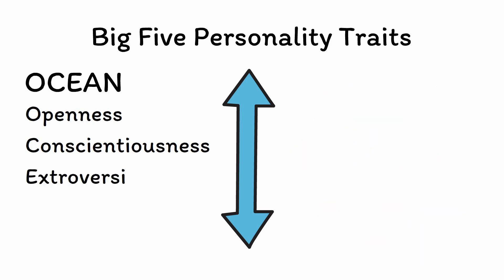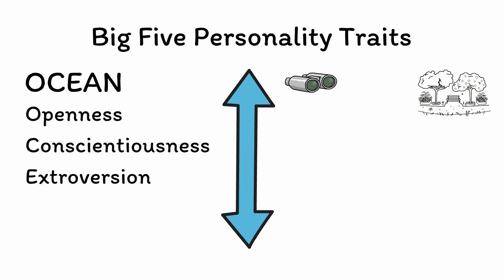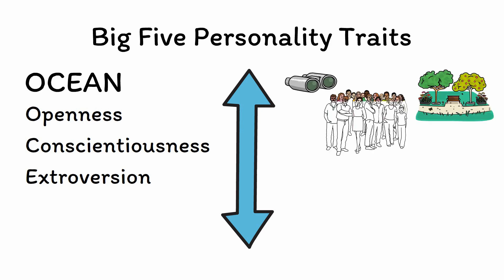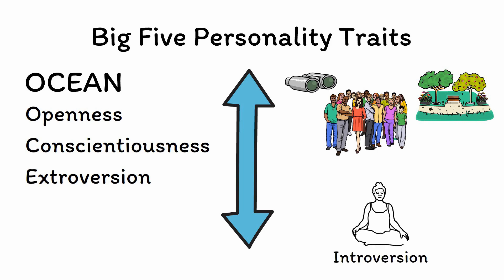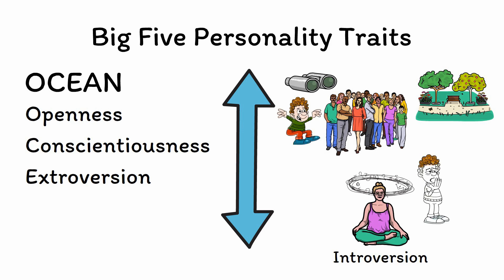Next, E is for Extroversion. Extroversion is the tendency to focus on one's external environment, with a particular fondness for wanting to be around other people. The opposite of Extroversion is Introversion, or the tendency to focus instead on one's inner mental and emotional state. The mark of an Extrovert is that they gain mental energy from interacting with others, while Introverts tend to have their mental energy depleted by being around others and will often need time alone in order to recharge.